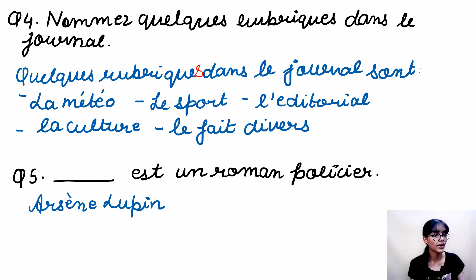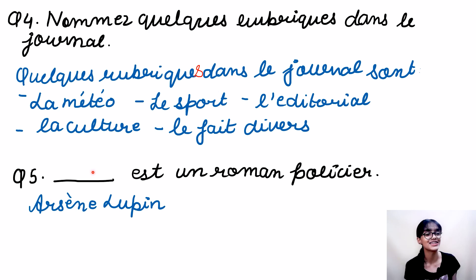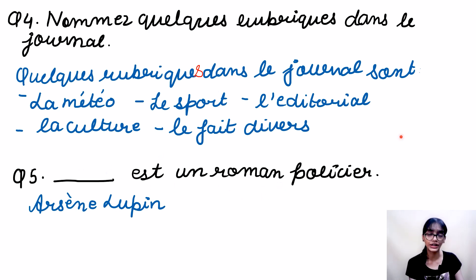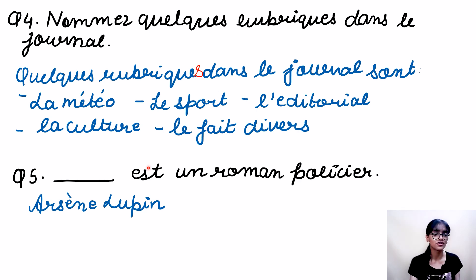The fifth question: Arsène Lupin est un roman policier. Arsène Lupin is the name of a detective or crime novel. This may appear as a one-marker or fill-in-the-blank question, so just keep it in mind.